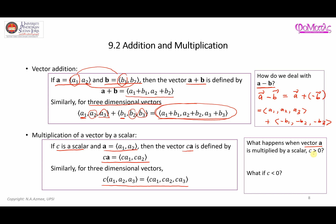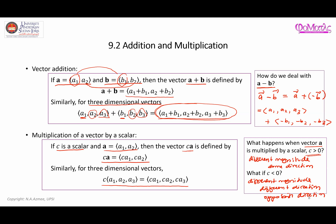When c is greater than zero, multiplying a vector by that scalar gives a different magnitude but the same direction. When c is less than zero, you also get a different magnitude, but because it is a negative value, you get a different — specifically an opposite — direction.